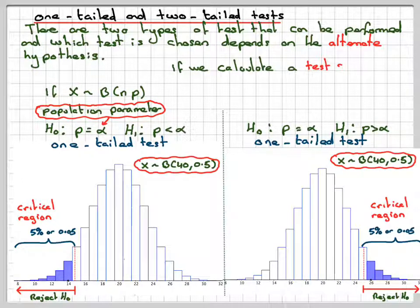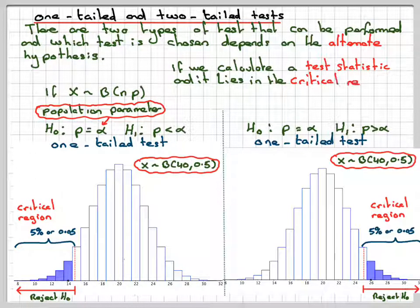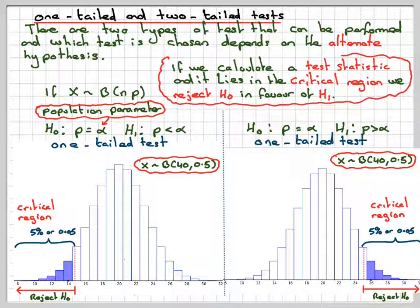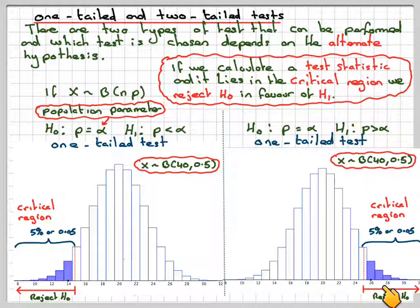If we calculate a test statistic and it lies in the critical region, so say my 15 out of 20 lays in my critical region somewhere over here, then I will reject H0 in favor of my alternative hypothesis, and I would say that the pass rate is actually higher than 40%, if using my example.